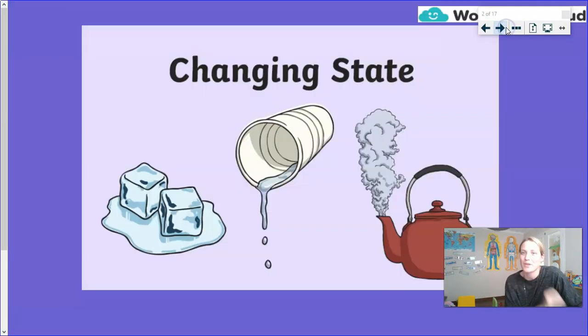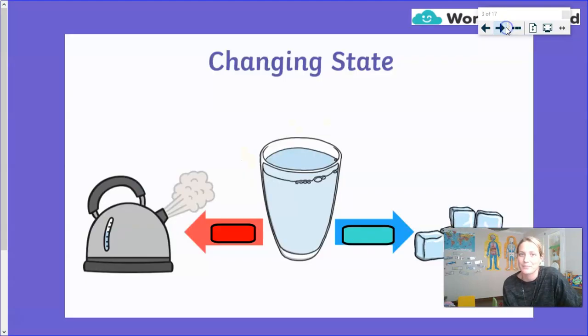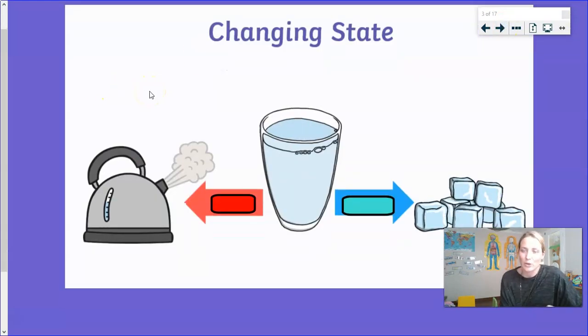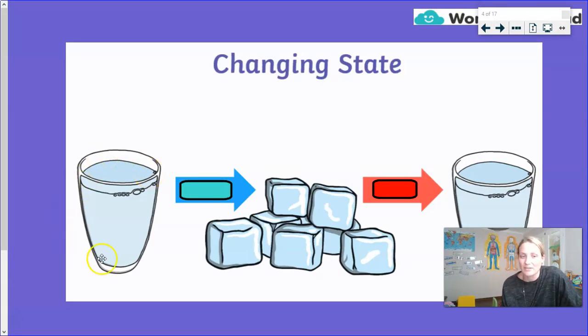So now let's quickly recap on the changes of state that we learned last week. On the screen in front of you, we've got a kettle with some steam or water vapor coming out, a glass of water, and some ice. I would like you to tell me what is occurring to get from the water to the steam and from the water to the ice. That's right, the word we use is boil. Water boils at 100 degrees Celsius. And freeze to get to ice. It freezes at 0 degrees Celsius. To get water to ice, it must be a cooling process. Freezing is a cooling process. To get from ice to water, we melt it, which is a heating process.